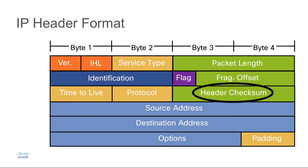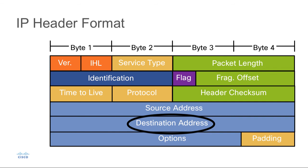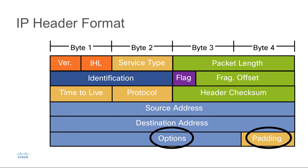That's followed by a header checksum — a value calculated based on the contents of the header itself, used to determine if there's been an error while the packet has been forwarded. The two fields that follow are the source IP address, which is the 32-bit identifier of the sender, and the destination IP address, the 32-bit IP address of the recipient. In standard IP routing, routers reference the destination address field, while in source-based routing, routers reference the source address field.